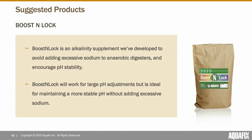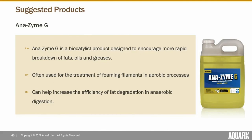So Boost and Lock was developed to avoid having something that contained too much sodium, since high levels of sodium can cause digester upsets and interfere with sludge coagulation and granule formation in UASBs. Boost and Lock works for large pH adjustments but we usually recommend it for maintenance and smaller pH adjustments like pH 6.5 to 7. Once you have a lower pH than 6.5 — particularly below 6 — you might want to use whatever you can get cheaply because you're probably going to need a lot of it.